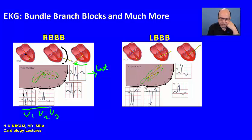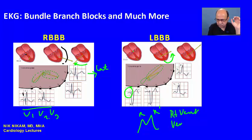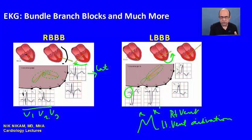During a left bundle branch block, initial activation of the septum produces the R wave. Then the impulse goes through the right bundle branch and the Purkinje system producing a negative deflection. After the right ventricle is activated, the impulse travels through the myocardium to the left ventricle, producing an RSR prime pattern. The first R is related to right ventricular activation and the second one to left ventricular activation. We see a wide QRS complex in both situations because of conduction through myocardial tissue as opposed to the fast pathways of the bundles and Purkinje system.